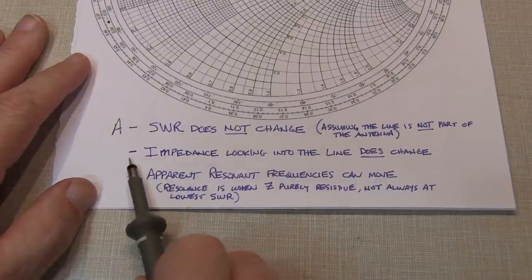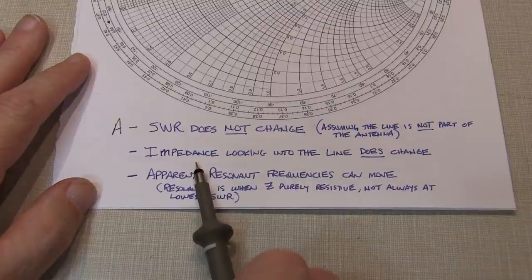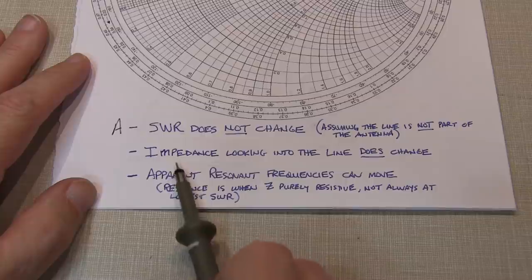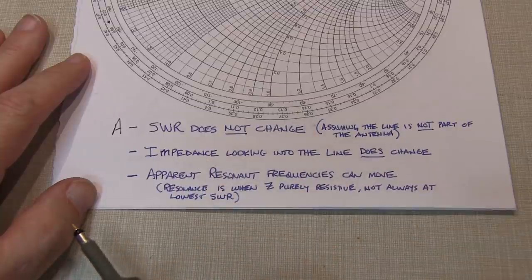However, the impedance looking into the line does change as you change the line length. So you could say, how does the impedance change without the SWR changing? Well, we'll take a look at this on the Smith chart, the perfect tool to look at this, and we'll show you why.